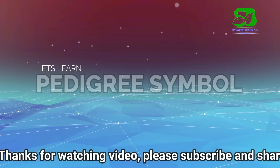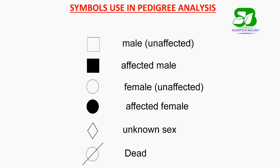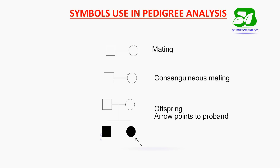Before starting pedigree, you must learn the symbols of a pedigree chart. The white square shape indicates an unaffected male, whereas the black square shape indicates an affected male. Similarly, the white circle indicates an unaffected female, whereas the black circle indicates an affected female. The diamond shape indicates unknown sex and the cross-checked circle indicates a dead offspring. A single horizontal line between male and female represents a marriage line, and the double horizontal line represents consanguineous mating — meaning marriage between close relations.